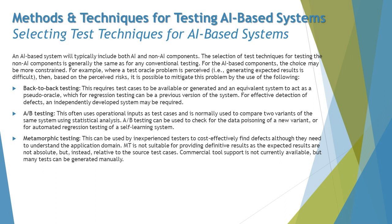A/B testing often uses operational inputs as test cases and is normally used to compare two variants of the same system using statistical analysis. A/B testing can be used to check for data poisoning of a new variant or for automated regression testing of a self-learning system.